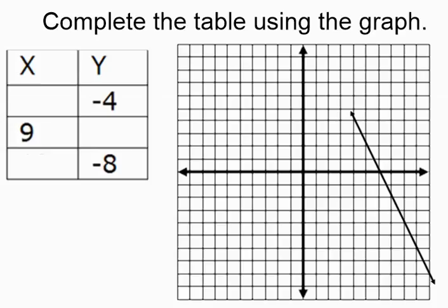In this example, we're asked to complete the table using the graph. As we know, we've got this function here, and we know it's a function because of the vertical line test. I'm asked to complete this table, which means I need to fill in the x and y coordinates. Remember that x is our horizontal movement, and y would be our vertical movement.